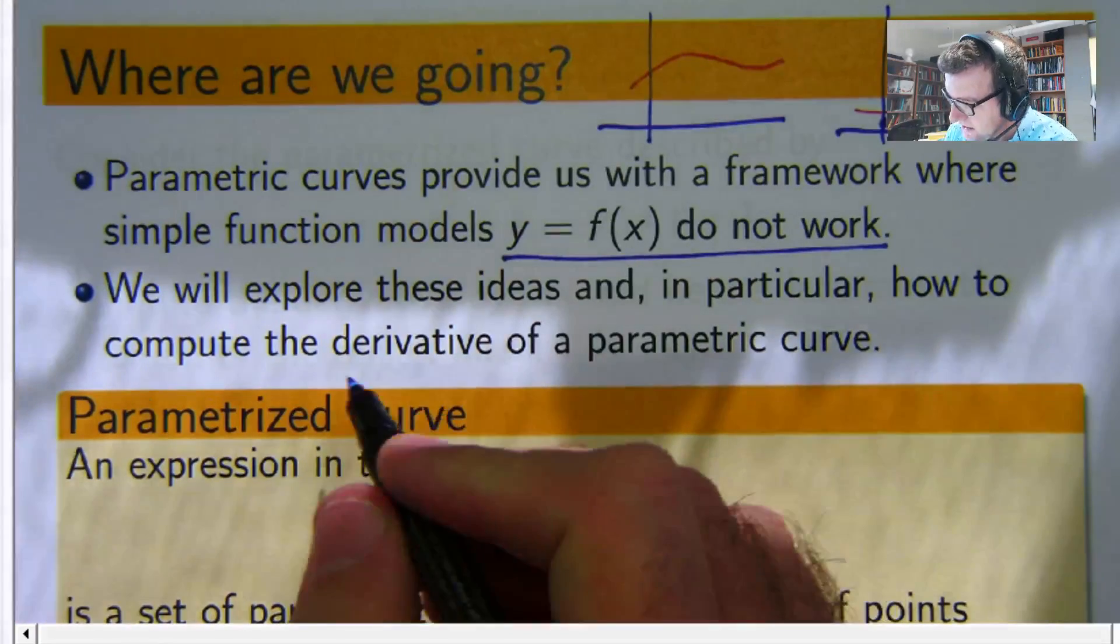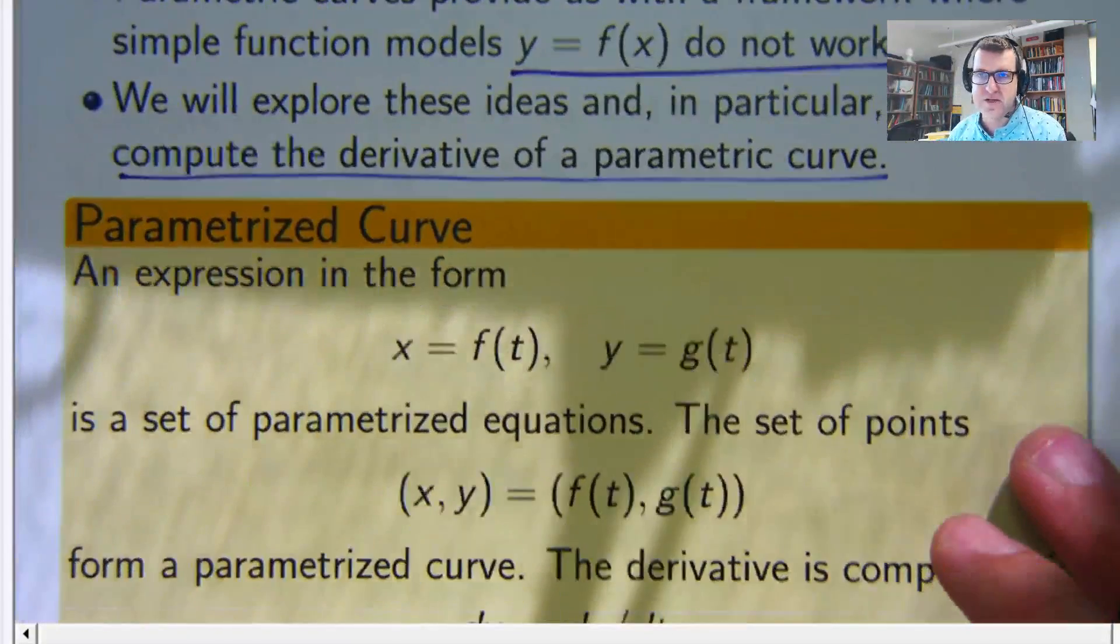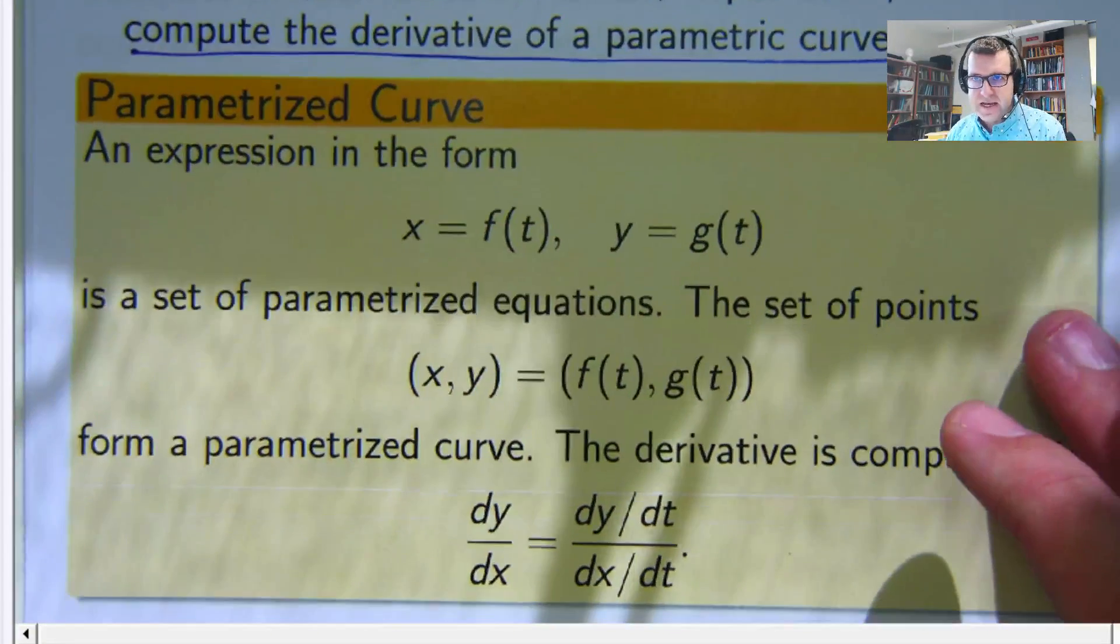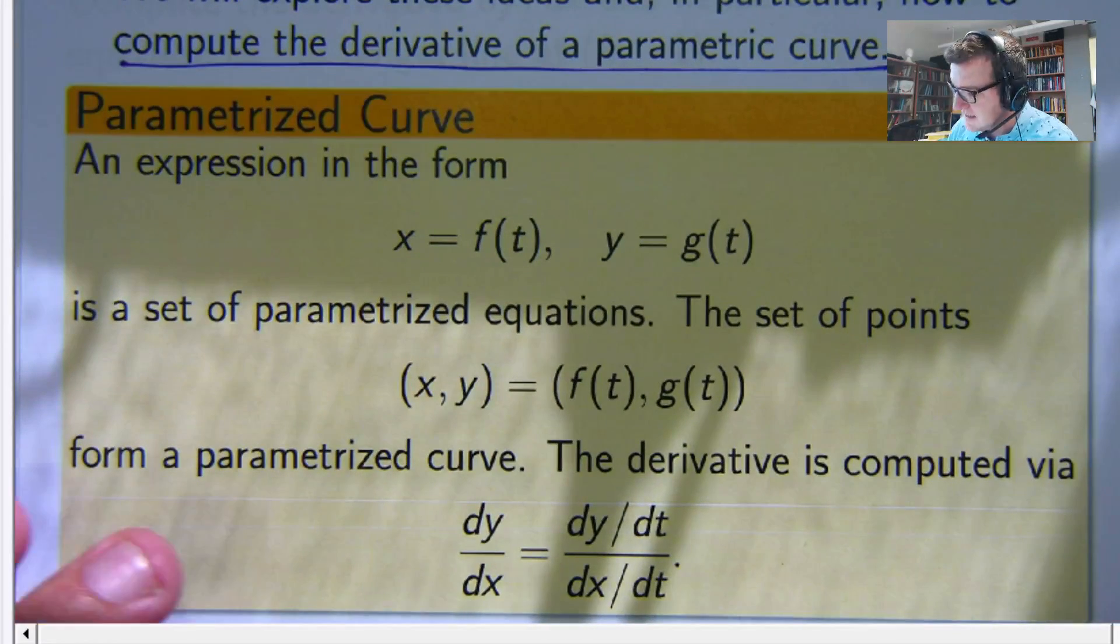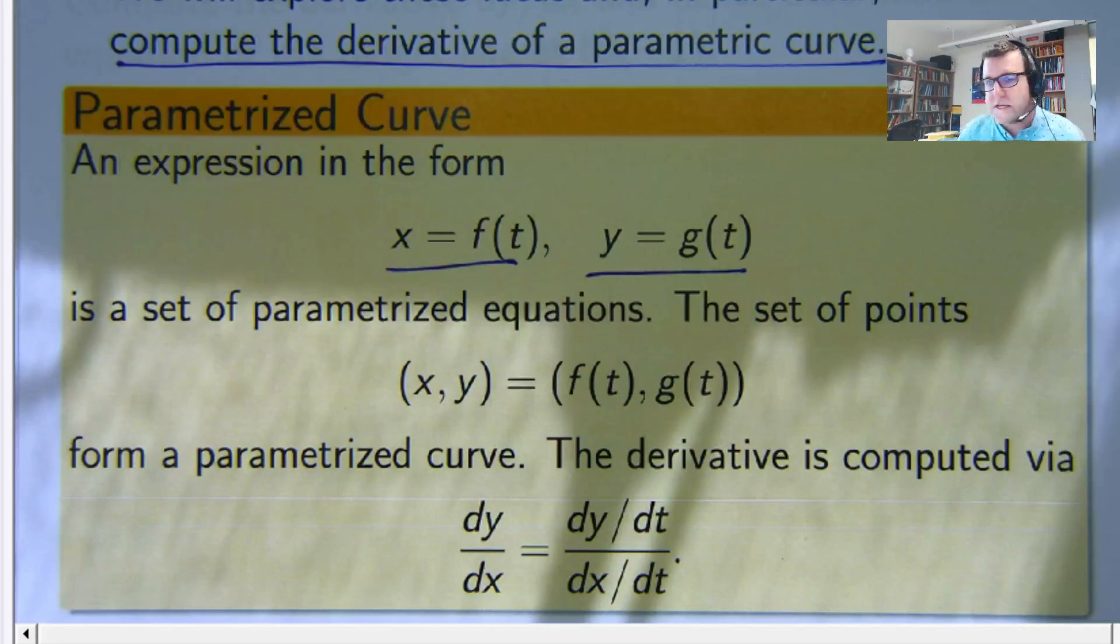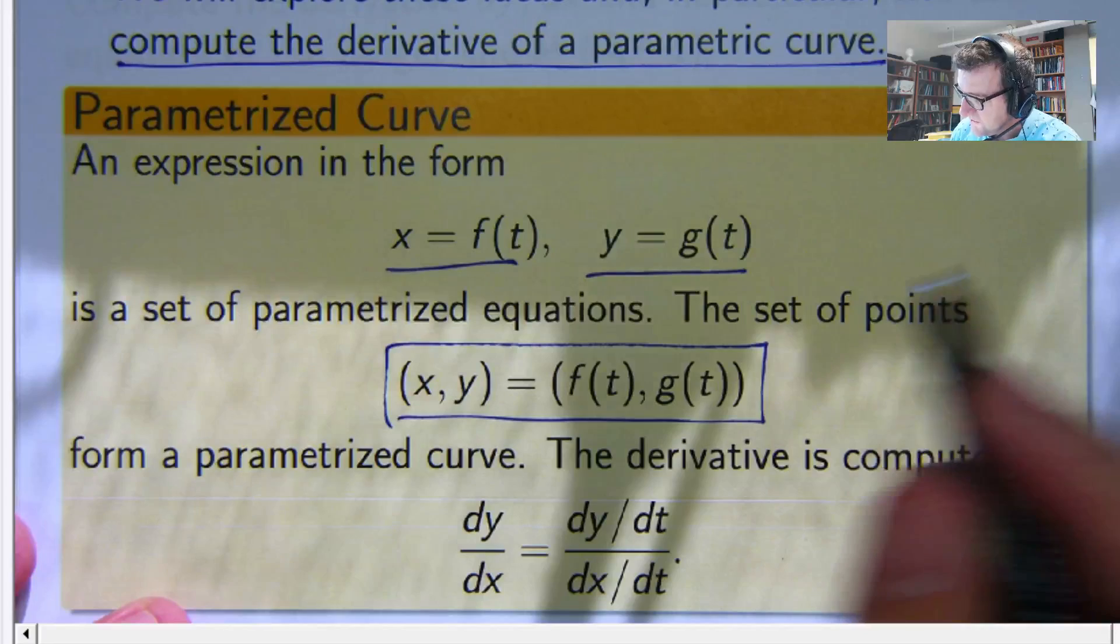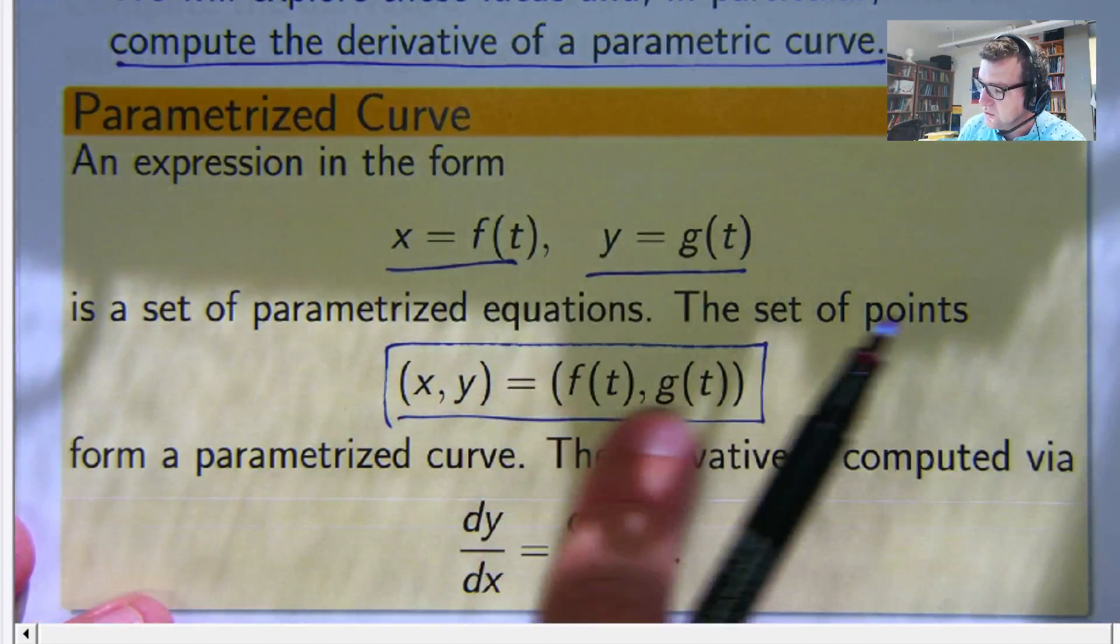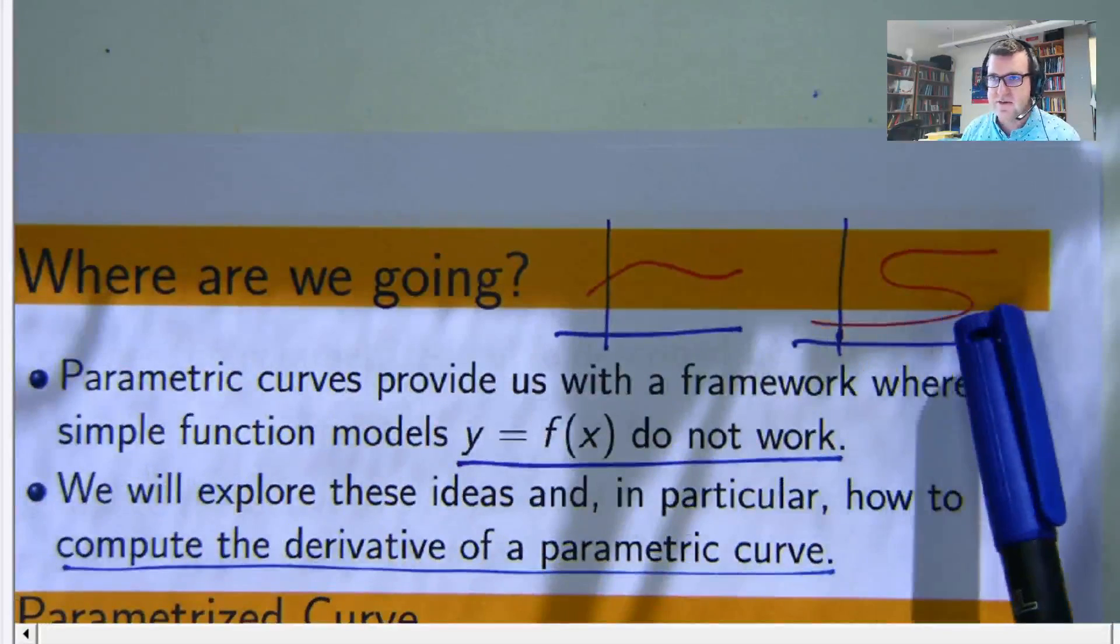So we are going to find out how to compute the derivative of a parametric curve. Essentially the parametric curve and equations have these kind of elements. We're working in two dimensions here. And the set of points associated with this kind of ordered double forms what's known as a parameterized curve.